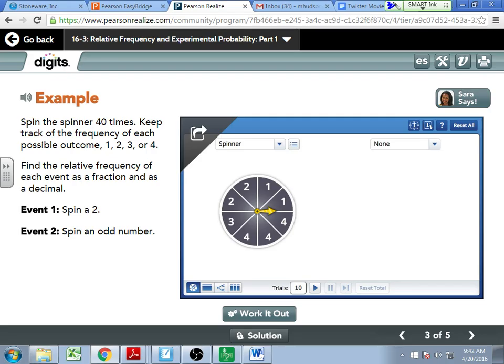Like what's my probability of spinning a two up here? Two out of eight, right? Because there's two threes. So I would say my theoretical is two eighths. But if I want to find the relative frequency of each event as a fraction, as a decimal, to find the relative frequency I would have to perform this and actually do it. So in digits, and it doesn't work from this module, in digits you can go in and there's a probability menu in math tools. There's probability, you've got coins, you've got spinners, you've got all like every probability that you could want to do, it's in there.